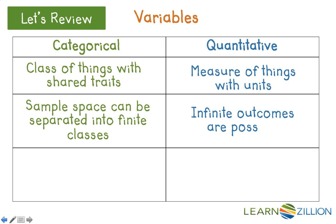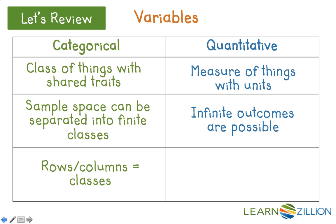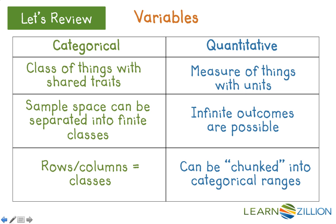However, with quantitative variables, there are an infinite number of possible outcomes. Since the sample space can be separated into a finite number of classes for categorical variables, we can easily put categorical variables into two-way tables where the rows and columns represent the classes. However, quantitative variables cannot be put into a two-way table unless we chunk all possible outcomes into categorical ranges.